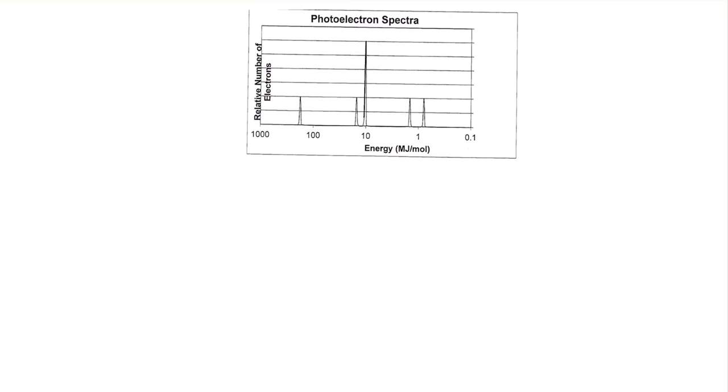First, we want to look at the x-axis, which is in energies, and it always goes by an exponential amount. So see how this does not go by one, two, three—it doesn't move linearly. It actually goes times 10, times 10, so this is exponential. Something to keep in mind: the higher the number, the more energy is required to remove that electron from the atom.